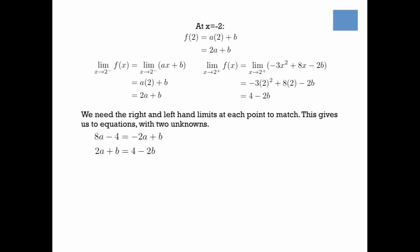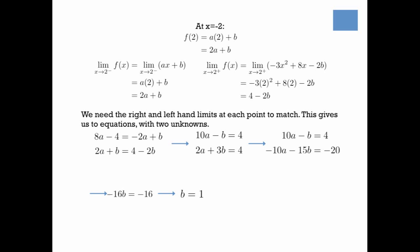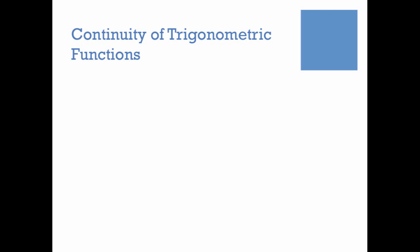We end up with two equations: 8a minus 4 equals minus 2a plus b (from the right and left-hand limits at minus 2), and 2a plus b equals 4 minus 2b (from the right and left-hand limits at 2). This is now an algebra problem. Using elimination — multiply the second equation by minus 5 and add the two equations — we get minus 16b equals minus 16, so b equals 1. Plugging back in gives a equals one half. With those two values, if you substitute back into the piecewise function, everything matches up, and you can draw the whole thing without lifting your pen.